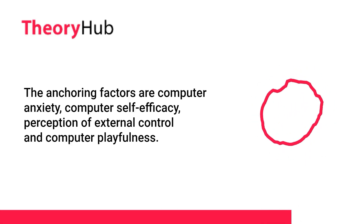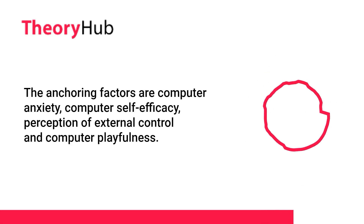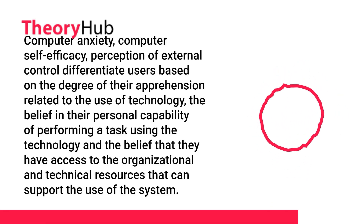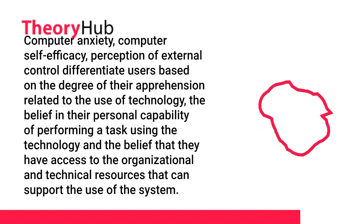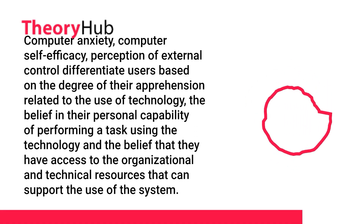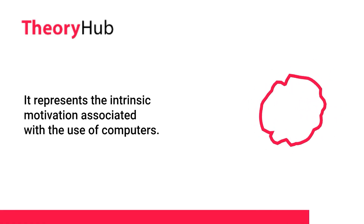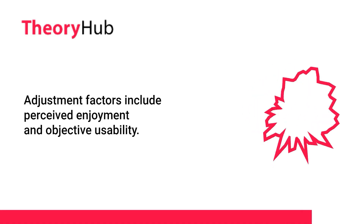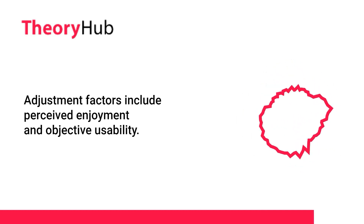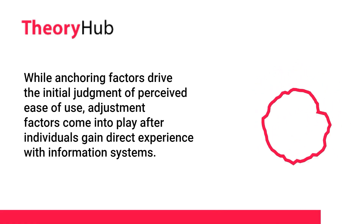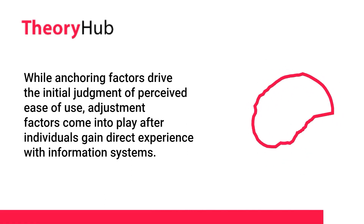The anchoring factors are computer anxiety, computer self-efficacy, perception of external control, and computer playfulness. These differentiate users based on their apprehension related to the use of technology, the belief in their personal capability of performing a task using the technology, and the belief that they have access to organisational and technical resources that support use of the system. Computer playfulness is defined as the degree of cognitive spontaneity in micro-computer interaction, representing intrinsic motivation associated with computer use. Adjustment factors include perceived enjoyment and objective usability, measuring how enjoyable information systems are perceived to be and the level of effort required to complete specific tasks. While anchoring factors drive the initial judgment of perceived ease of use, adjustment factors come into play after individuals gain direct experience with information systems.